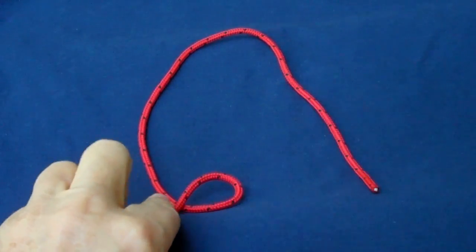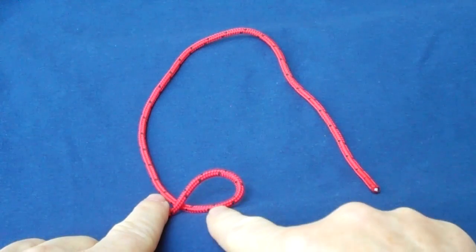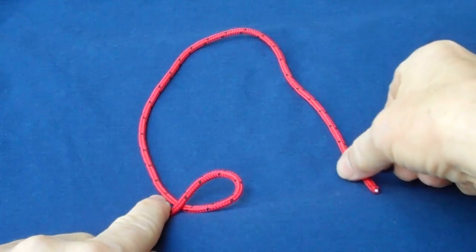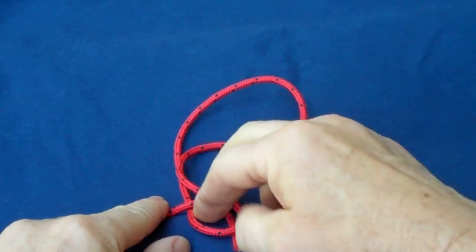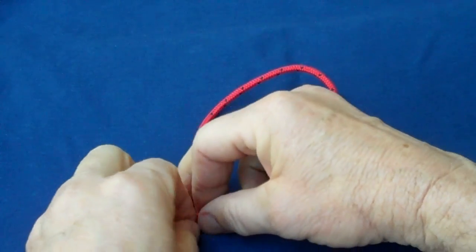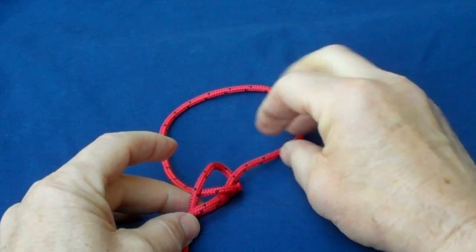We're going to start right there, on the main line, and we're going to create a loop. Now, this tag end goes through, and then around the main line, like that.